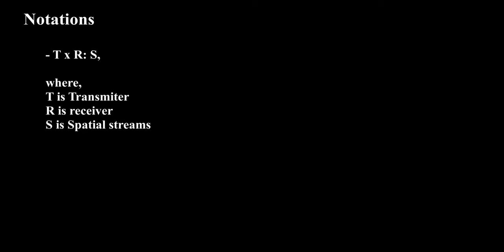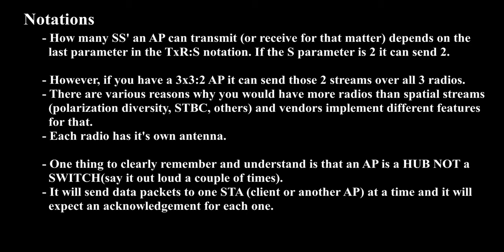Notations: T×R:S — where T is transmitter, R is receiver, and S is spatial streams. How many spatial streams an AP can transmit or receive depends on the last parameter in the T×R:S notation. If the S parameter is 2, it can send 2. However, if you have a 3×3:2 AP, it can send those 2 streams over all 3 radios.